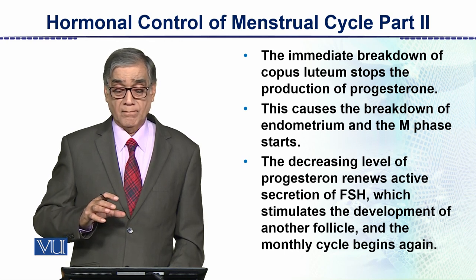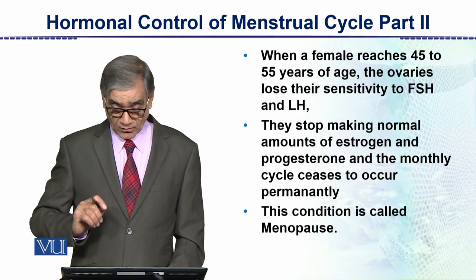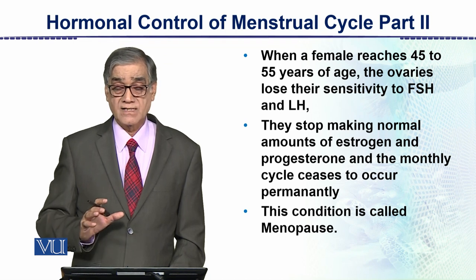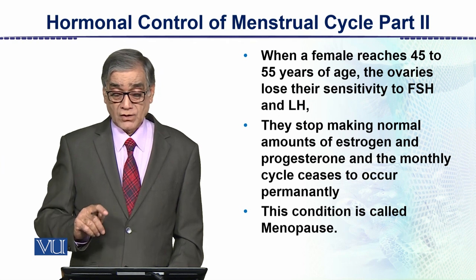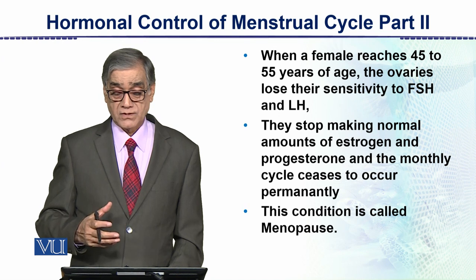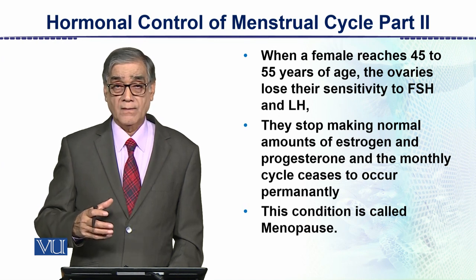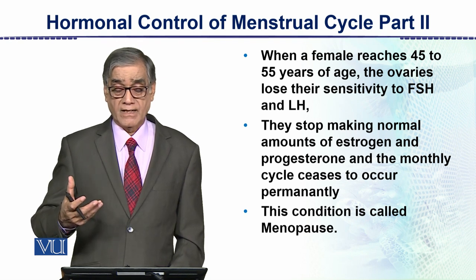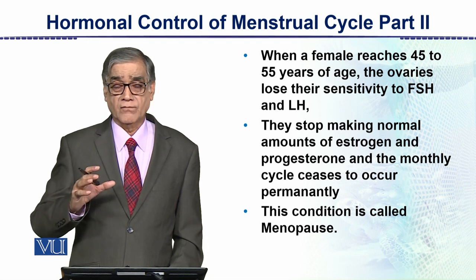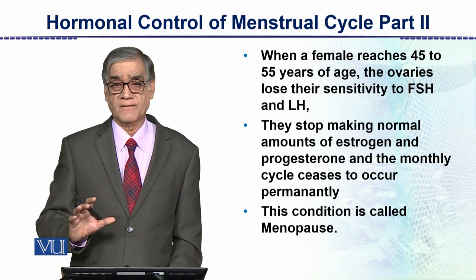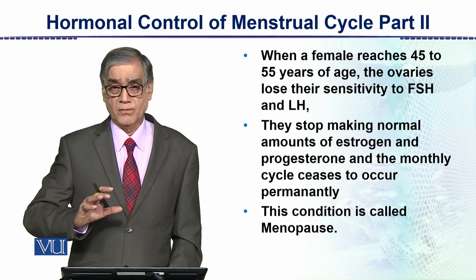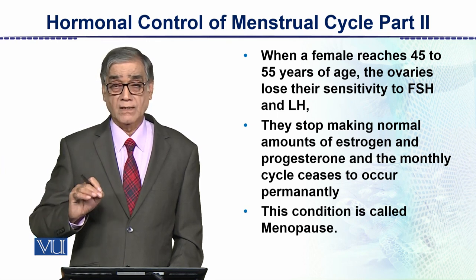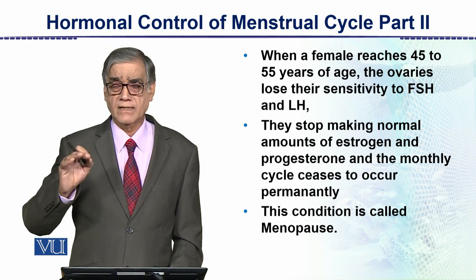This is all about the menstrual cycle, part one. When a female reaches about 45 to 55 years of age, the ovaries lose their sensitivity to FSH and LH. This stops normal production of estrogen and progesterone, and the normal cycle ceases permanently. Women can no longer reproduce because the reproductive cycle stops. This condition is called menopause, and it extends for the rest of the person's life.